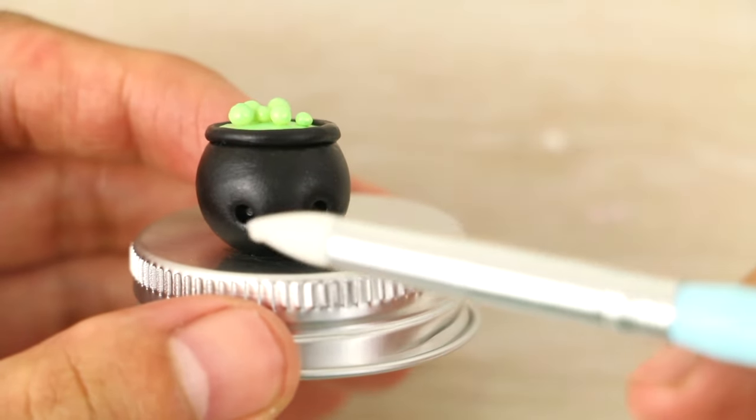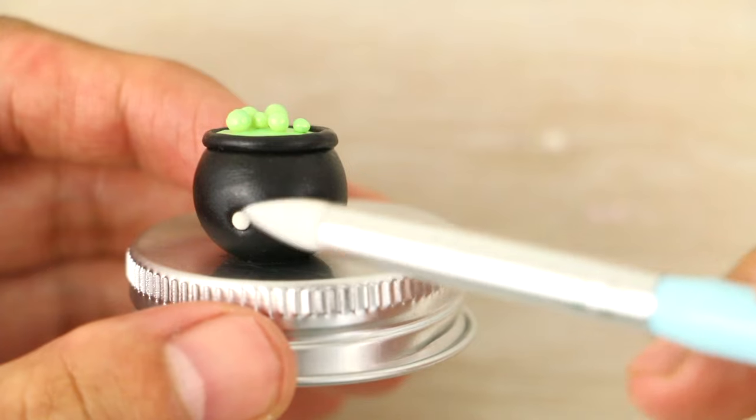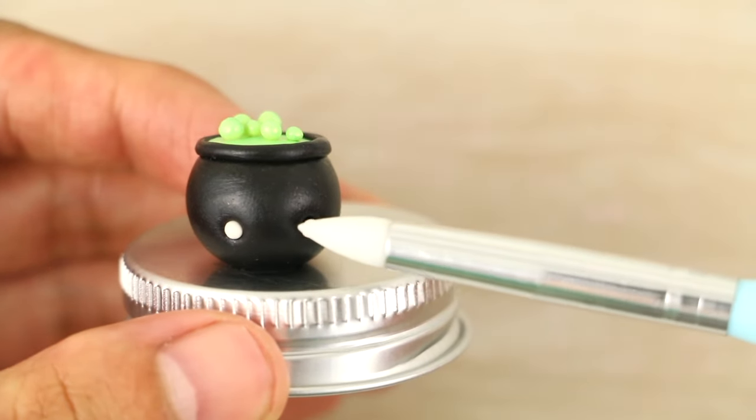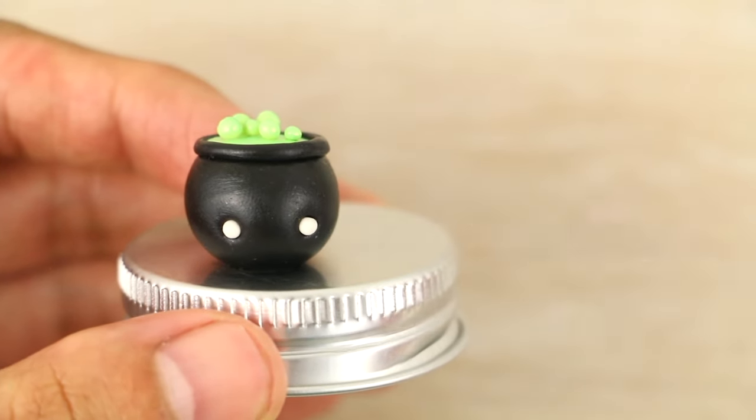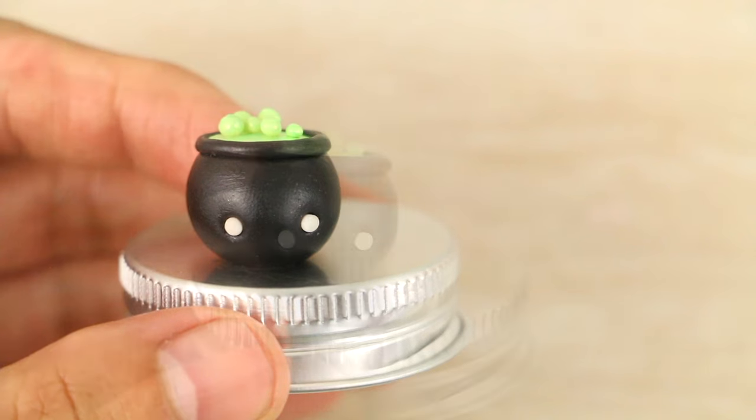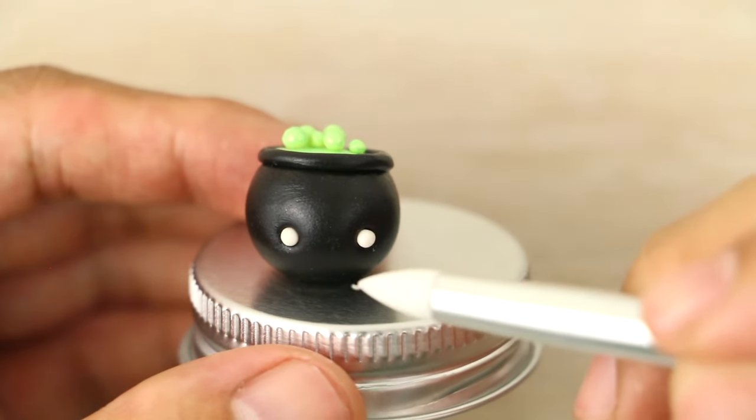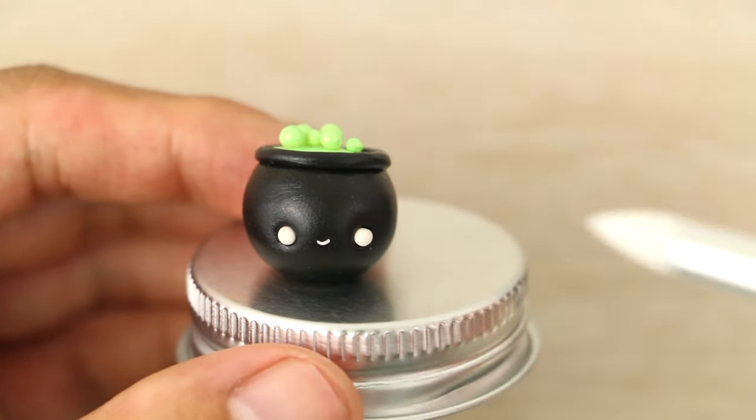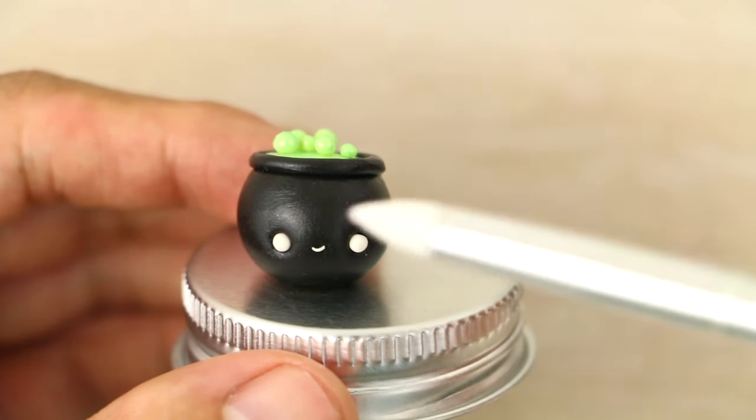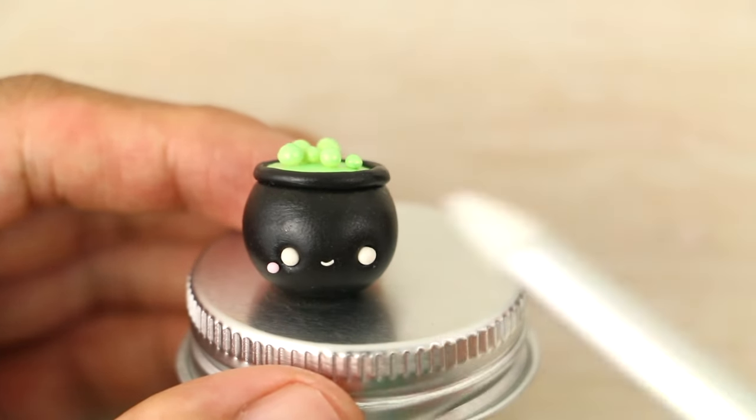I'm adding in little balls of white and a tiny u-shape for the mouth. Then for the cheeks, I'm pressing on two small balls of light pink.